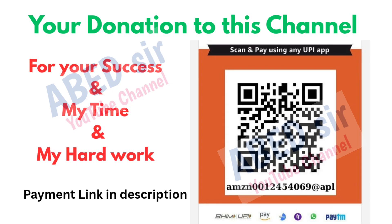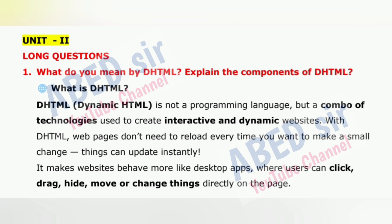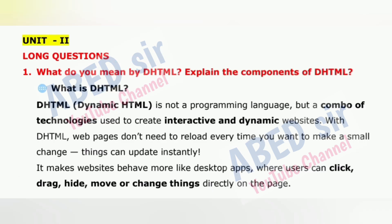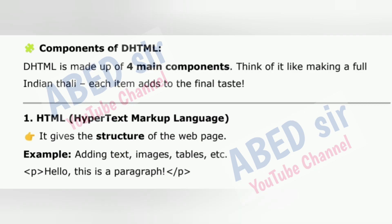Next, Unit 2 important long questions. First important long question is 1: What do you mean by DHTML? Explain the components of DHTML. DHTML, Dynamic HTML, is not a programming language but a combo of technologies used to create interactive and dynamic websites. With DHTML, web pages don't need to reload every time you want to make a small change — things can update instantly. It makes websites behave more like desktop apps, where users can click, drag, hide, move, or change things directly on the page.